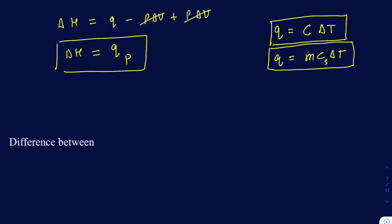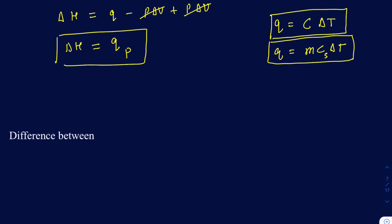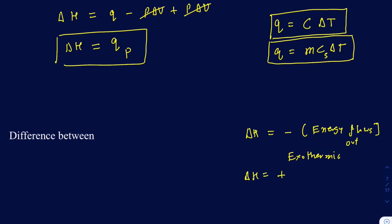When energy leaves the system, the same sign convention applies to delta H as to delta E. If delta H is negative, energy flows out of the system — that's called an exothermic reaction. If delta H is positive, energy is gained by the system — that's called an endothermic process.